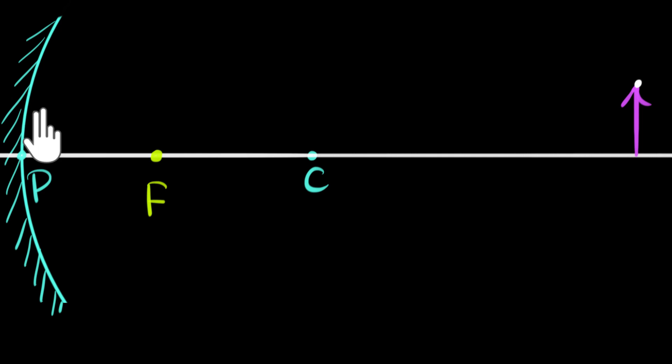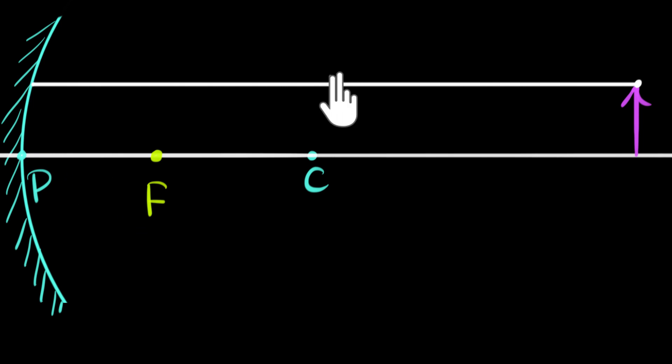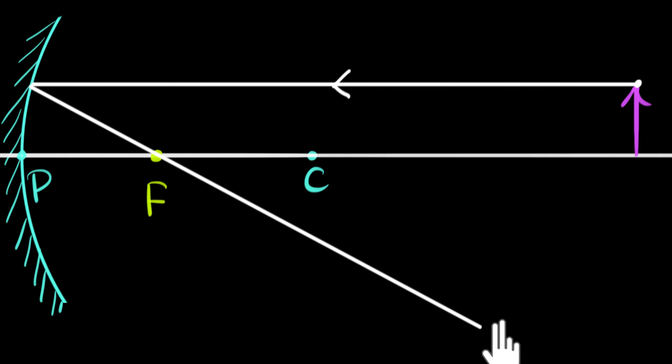If we take a random ray that hits over here, it becomes difficult to figure out the angle of incidence and the angle of reflection. But if you pick a few particular rays, it becomes easier to trace them. One of those rays we'll draw is the one that goes parallel to the principal axis. We pick this because we already know what happens to it: all parallel rays hitting this mirror go through the focus after reflection.